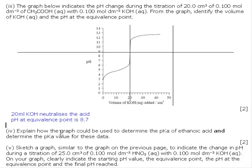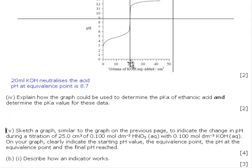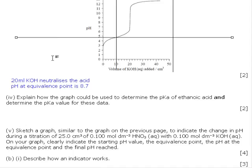Explain how the graph could be used to determine the pKa of ethanoic acid and determine the pKa value for this data. This is one of the interesting characteristics. At the half equivalence point, at 10, the pH value is equal to the pKa of ethanoic acid. So the pH at the half equivalence point equals pKa of ethanoic acid.